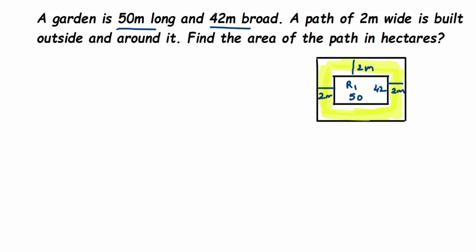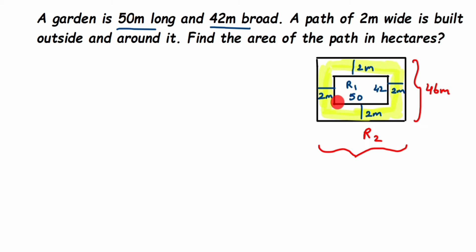The path is 2 meters around it. For the outer rectangle R2, the breadth is 42 plus 2 plus 2, which makes 46 meters. Similarly, the length is 50 plus 2 plus 2, which makes 54 meters. So the length and breadth of the outer rectangle R2 are 54 meters and 46 meters.